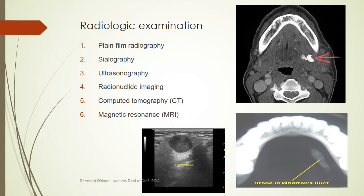The visibility of calculi on imaging depends on the degree of calcification within the salivary gland. On CT images, a salivary gland calculus is very well demarcated, while it may appear dull and faint on an occlusal radiograph. Additionally, pre-existing calcifications such as phleboliths, tonsilliths, and lymph node calcifications may be mistaken for a salivary gland calculus in conventional radiographs. However, salivary gland calculi can sometimes be clearly identified in certain conventional radiographs and panoramic views.